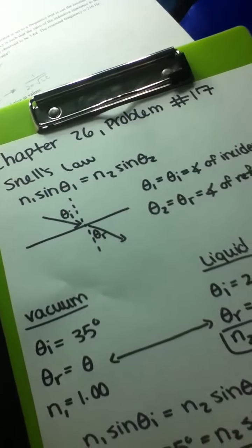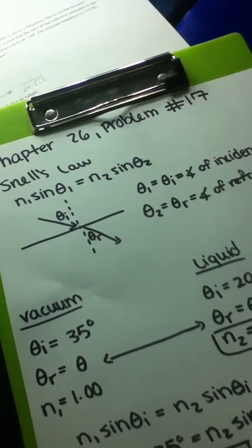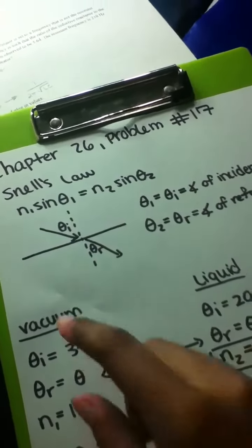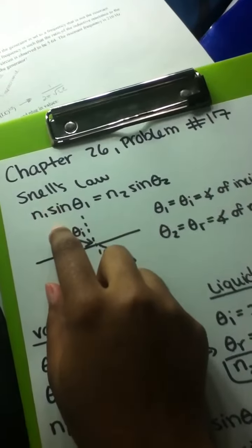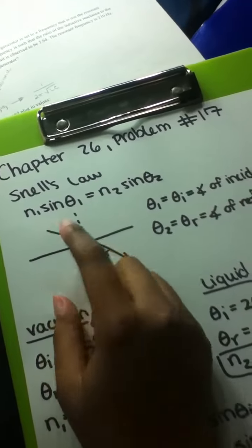What is the index of refraction of the liquid? For this problem, we are dealing with Snell's law right here. And it is n₁ times sin θ₁ equals n₂ sin θ₂.